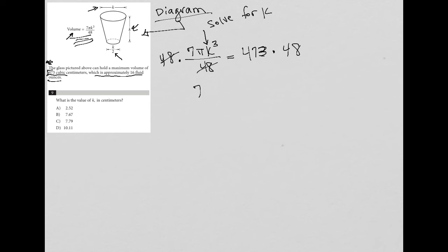First of all, cross that on the left-hand side. I'm left with 7πK³. Then I'm going to go to my calculator and figure out what is 473 times 48. And that would give me 22,704.